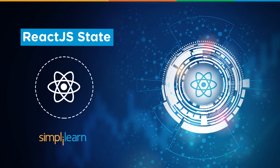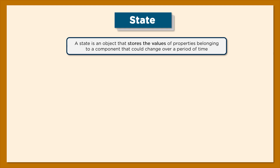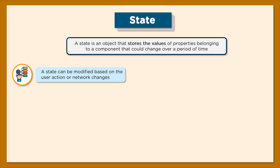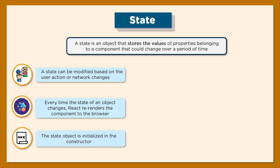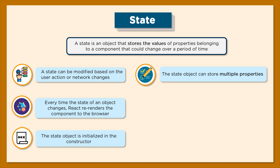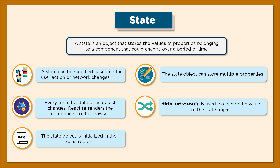What exactly is state in React? Typically, a state is an object that stores the values of properties belonging to a component. These values can change over time either via user interactions or network changes, and the state helps facilitate this functionality. Every time the state changes, React re-renders the component to the browser. The state is initialized in the constructor, and a state can also store multiple properties.